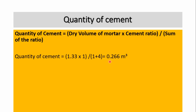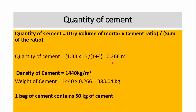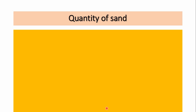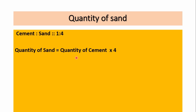As we know, the density of cement is 1440 kg per meter cube. Multiplying this density by the volume gives the weight of cement: 1440 multiplied by 0.266, which equals 383.06 kg. Since one bag of cement contains 50 kg, dividing by 50 gives us 7.661 bags of cement.